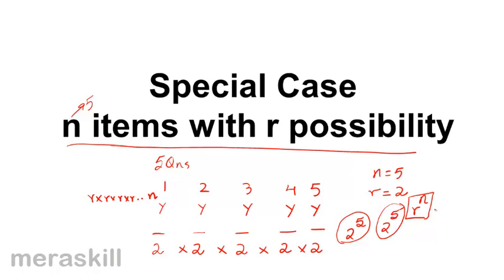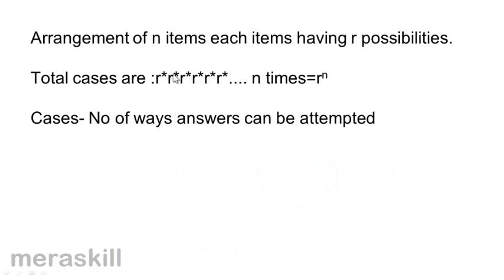For the arrangement of n items where each item has r possibilities, the number of ways is r possibilities for the first question, times r for the second, times r for the third, and so on for all n items, giving r raised to n total ways.